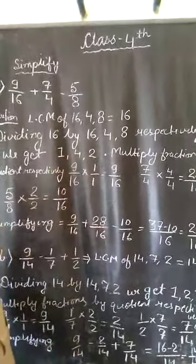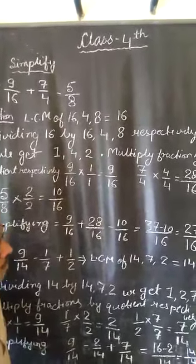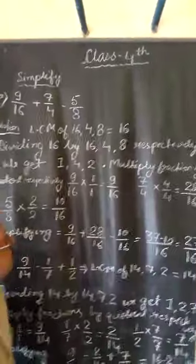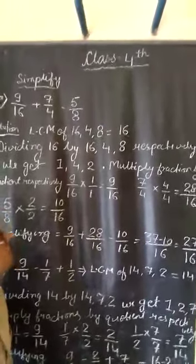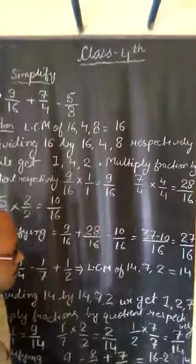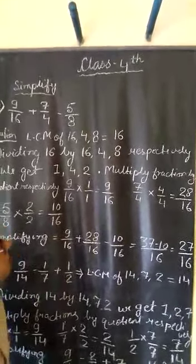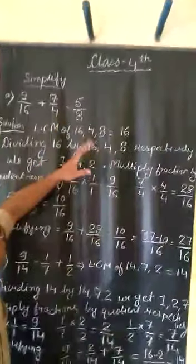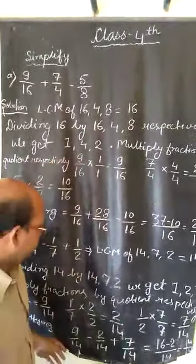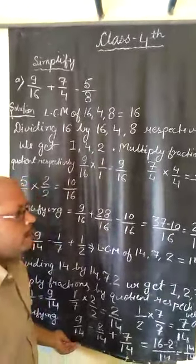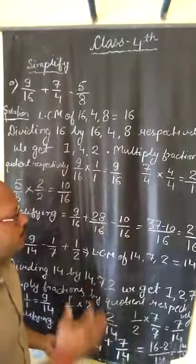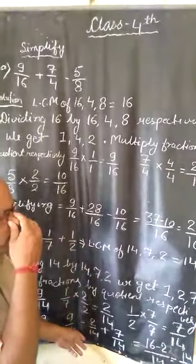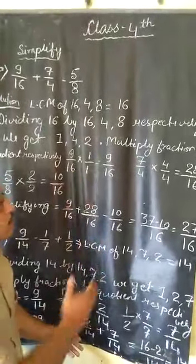For all such simplification questions: first, find the LCM of the given denominators. After obtaining the LCM, make all fractions — positive or negative — into like fractions. After making like fractions, add all the positive numbers together, and add all the negative numbers together. Then subtract the total of negative numbers from the total of positive numbers to obtain the answer. If there are more than 3, 4, or 5 fractions with multiple positive and negative terms, follow the same approach. Okay, guys.